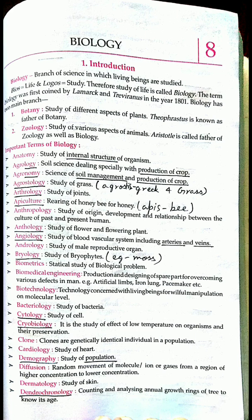The next important one is agrostology. Agrostology is the study of grass. In the Greek language, 'agrostis' means grass — it is a type of grass. The root word is 'agrosty,' and agrostology means the study of grass.